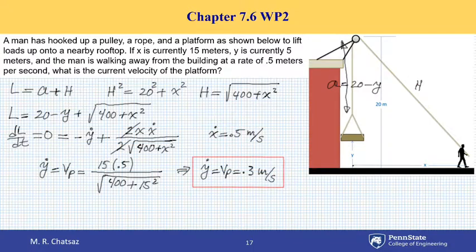So in dependent motion situations, again, basically the main idea is to write the constant length of the cable in terms of positions, either X1, X2, or XA, XB, or XY, or whatever the case might be. Thank you for watching.